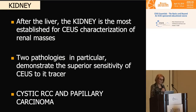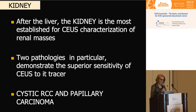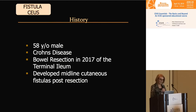Now, the kidney. Richard has already spoken about the kidney, but after the liver, the kidney is the most established organ for CEUS characterization of renal masses. Two pathologies that demonstrate the superior sensitivity of CEUS to its tracer are cystic renal cell carcinoma and papillary carcinoma.